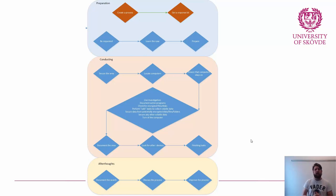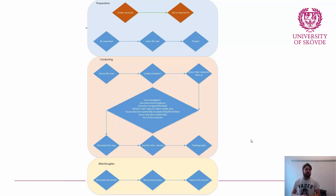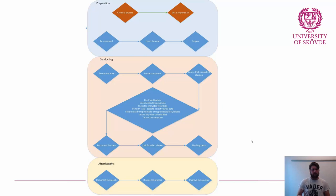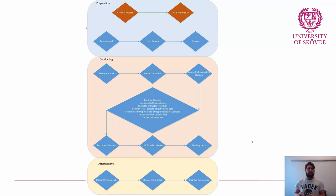The next step is the conduction phase — actually conducting the house search. The live investigation is just one part of conducting a house search. What may be most scary for a forensic expert on their first house search is entering a house where suspects may be present. The first step of the conduction phase is securing the area — making sure no one is going to point a gun at you — and that is handled by the police. Then locate computers, and ensure they stay on, since encrypted computers must remain powered for data extraction.